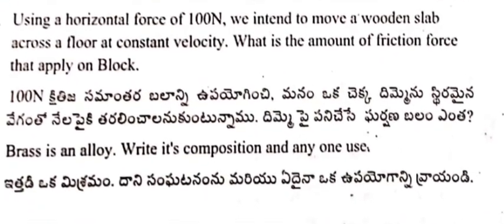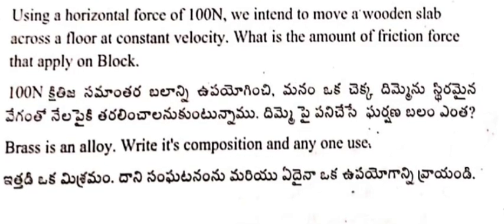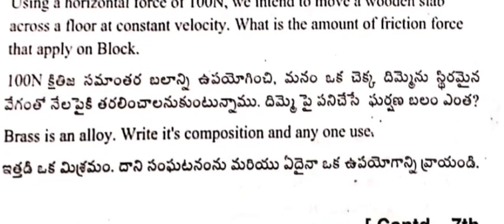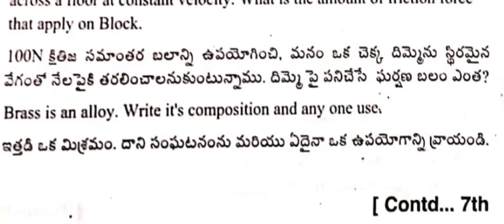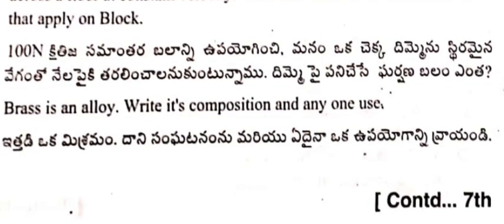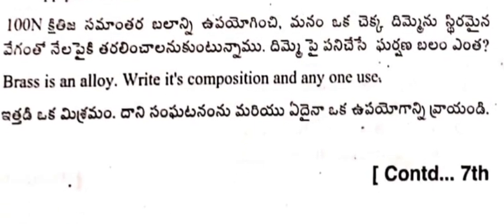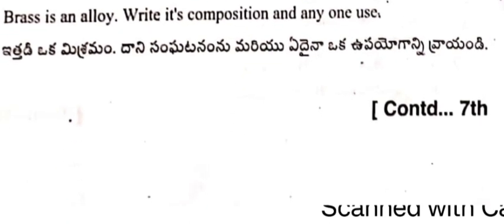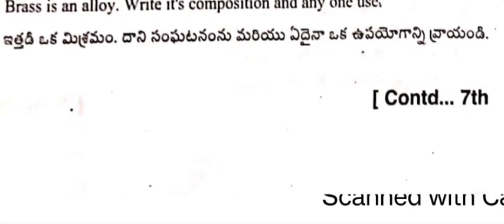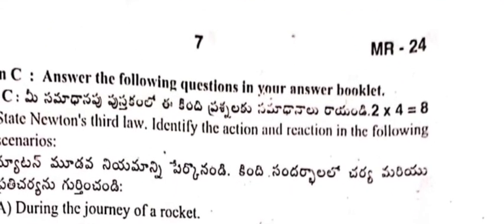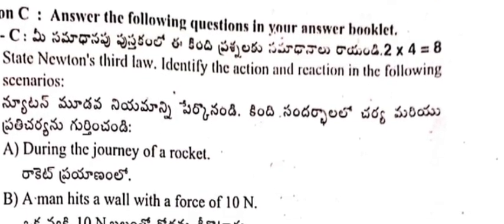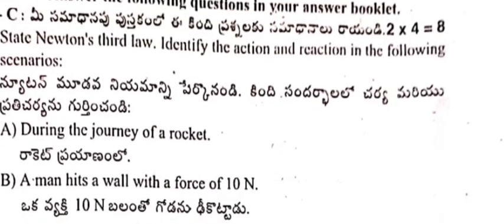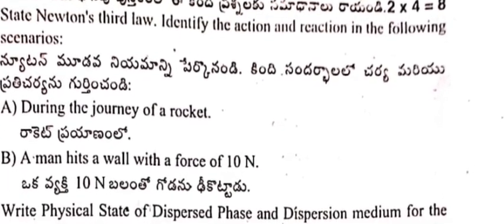Now two more questions. Question 16: Using a horizontal force of 100 newtons, we intend to move a wooden slab across a floor at constant velocity — what is the amount of friction force applied on the block? Question 17: Brass is an alloy — write its composition and any one use.